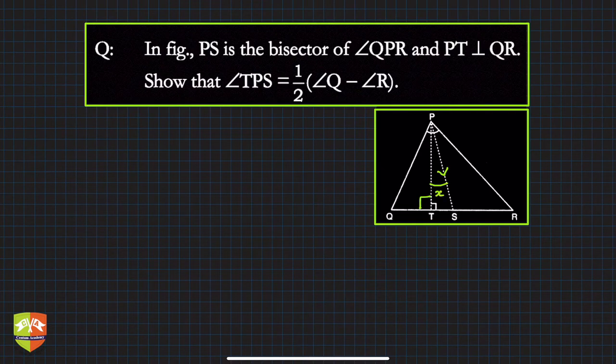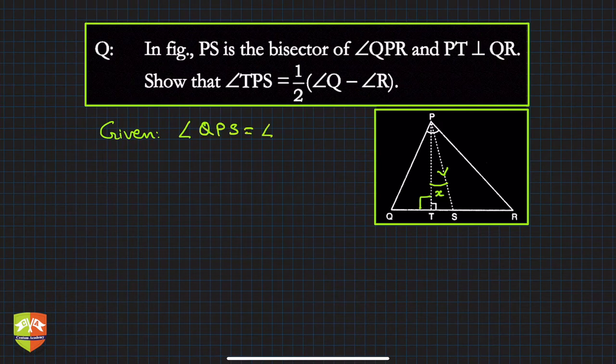Okay, x is half (∠Q - ∠R). So how to approach this problem? Let's start with writing whatever is given. Given is ∠QPS = ∠RPS.